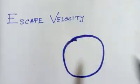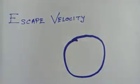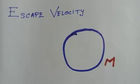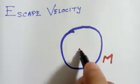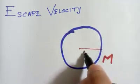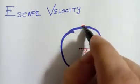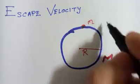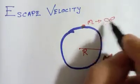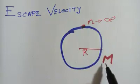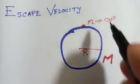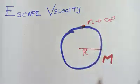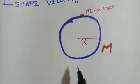I'll quickly draw a simple diagram. This is our earth — our mother earth — and we call its mass M. The radius, that is the distance from the center of the earth, we consider as capital R. And here is a small mass m sitting on the surface which wants to escape from the gravitational field of the earth and move towards infinity.